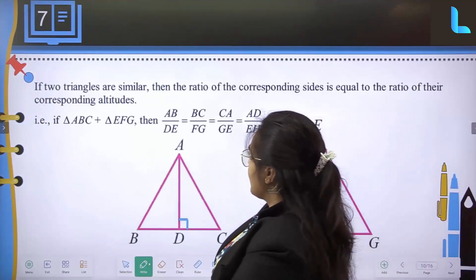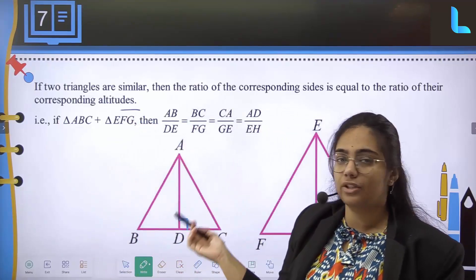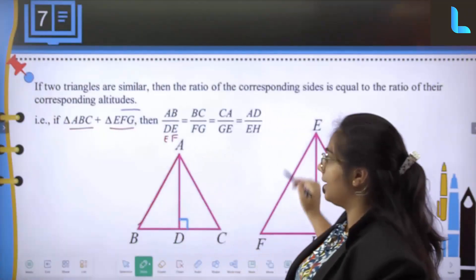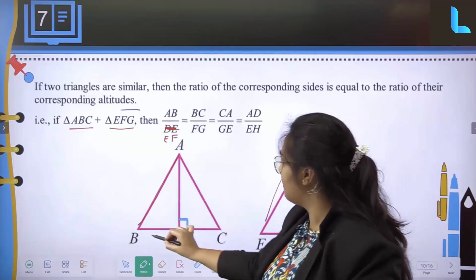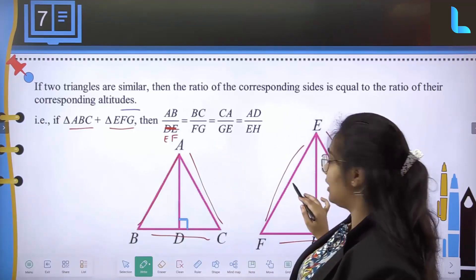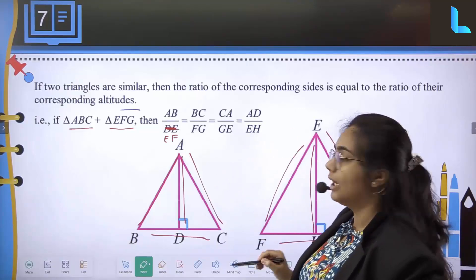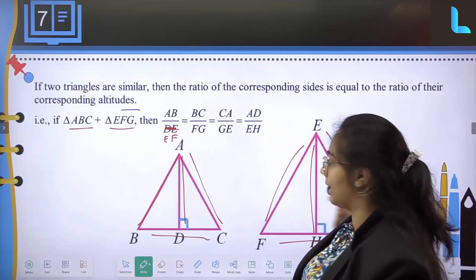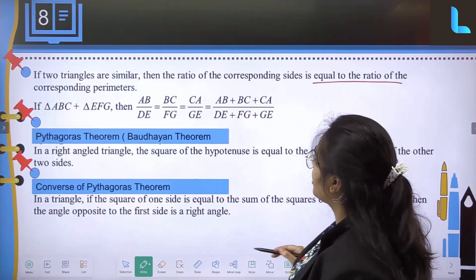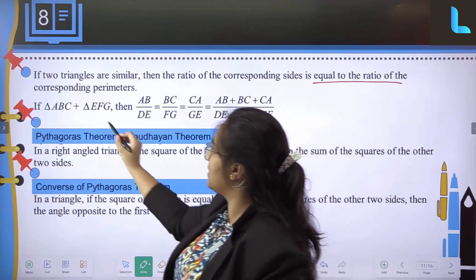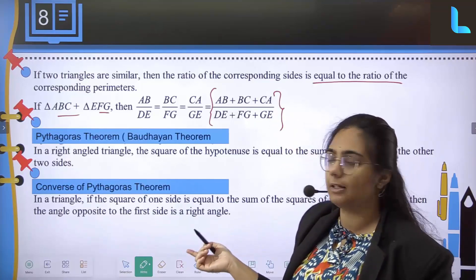If two triangles are similar, the ratio of their corresponding sides is equal to the ratio of their corresponding altitudes. For triangles ABC and EFG: AB upon EF equals BC upon FG equals AC upon EG, and also equals AD upon EH. Similarly, if two triangles are similar, the ratio of their corresponding sides is also equal to the ratio of their corresponding perimeters.